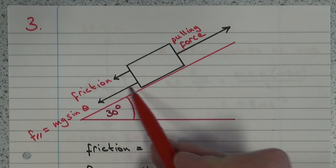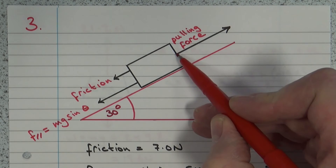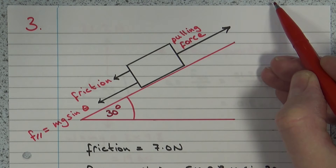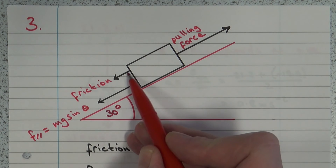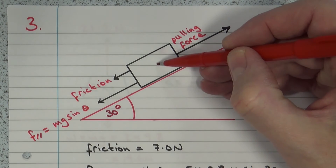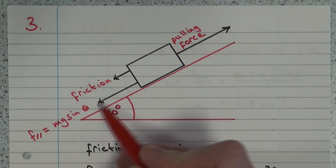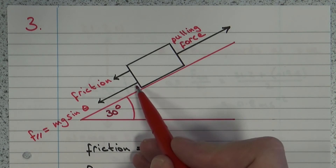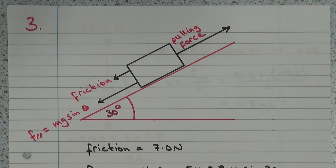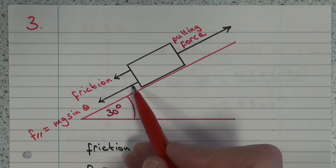For question number 3, here is the diagram from the question showing a block on a slope. The pulling force acts up the slope. The question states the block is moving up the slope, so friction is always in the opposite direction — acting down the slope, parallel to it. The weight acts straight down. One component of that weight force is parallel to the slope, which I've called F parallel. If the block moves at constant speed, we have balanced forces: total force up equals total force down.